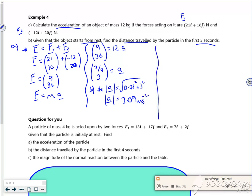So if I use SUVAT, I want to find S, U is 0, V I'm not bothered about, A is 3.09, and T is 5. So I want one without V, so that's going to be S equals UT plus a half AT squared. So S is 0 times 5 plus a half times 3.09 times 5 squared. And that gives 38.7 meters.